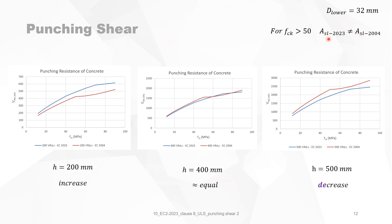For high-strength concrete, the longitudinal reinforcement is different in Eurocode 2023 compared to Eurocode 2004 because the optimum reinforcement for bending is defined differently in each code version.